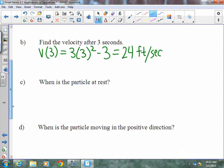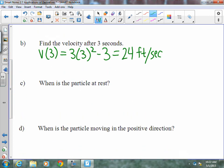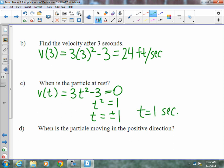Part C, when is a particle at rest? If you noticed earlier on our notes, it's at rest when v(t) equals zero, so we're going to take v(t), which is 3t² - 3, and set it equal to zero. Add your 3, divide by 3, t² equals 1, so t equals plus or minus 1. Minus 1 doesn't matter when we're talking about time because you can't have negative time, so our answer is t equals 1 second.